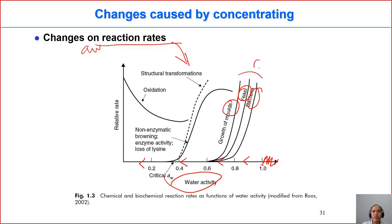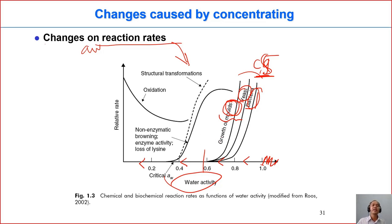We already discussed this in chapter 5. Mold is the most tolerant to low water activity, then yeast, then bacteria. So if the product is a little bit dry, we normally do not need to worry about bacteria, but we still have to worry about yeast and mold. When water activity is below 0.6, no microbial growth occurs.